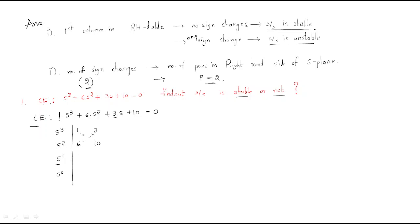For the s¹ row in the RH table, compute: (6×3 − 1×10) divided by 6, which gives (18 − 10)/6 = 8/6. The s⁰ row gives 10. Now checking the first column: 1, 6, 8/6, and 10 — all values are positive with no sign changes. Therefore, the given system is a stable system.